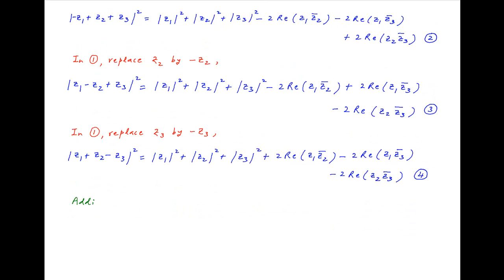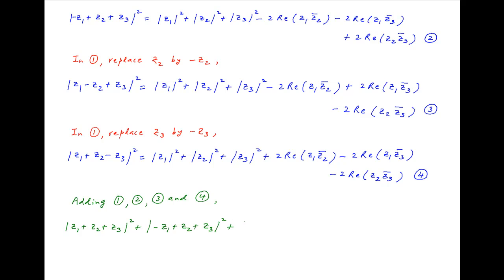Now adding results 1, 2, 3, and 4. On the left hand side we get the square of the absolute value of z1 plus z2 plus z3, plus the square of the absolute value of minus z1 plus z2 plus z3, plus the square of the absolute value of z1 plus z2 minus z3.